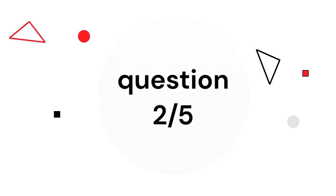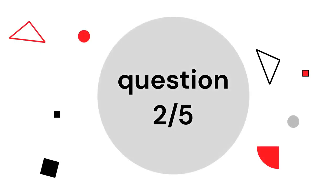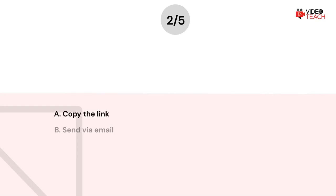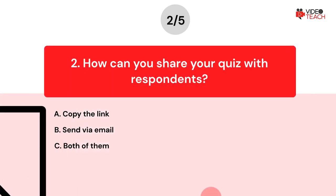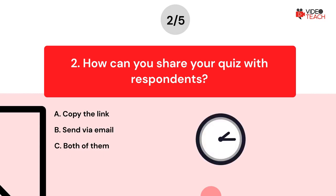Question number two. How can you share your quiz with respondents? Option A: Copy the link. Option B: Send via email. Option C: Both of them. Now you have about 15 seconds to think about your answer.